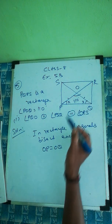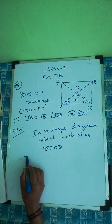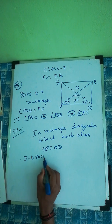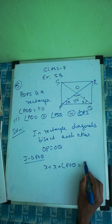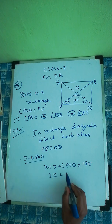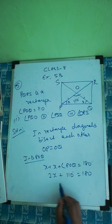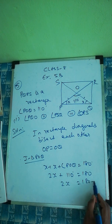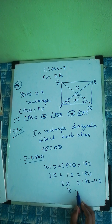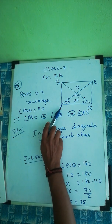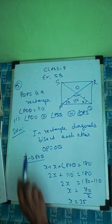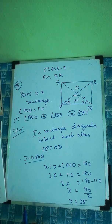Since OP equals OQ, let both angles be X. In triangle POQ: X plus X plus angle POQ equals 180. So 2X plus 110 equals 180, giving 2X equals 70, and X equals 35 degrees. Therefore angle PQO equals 35 degrees.